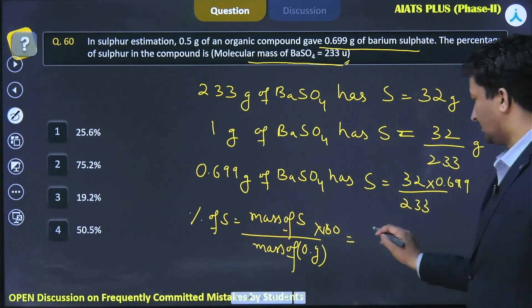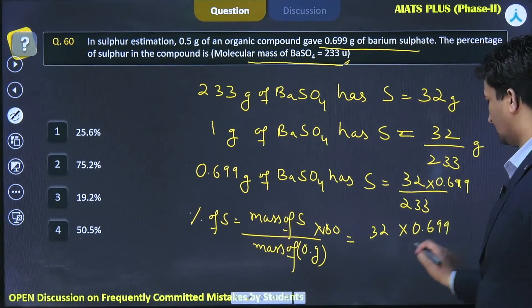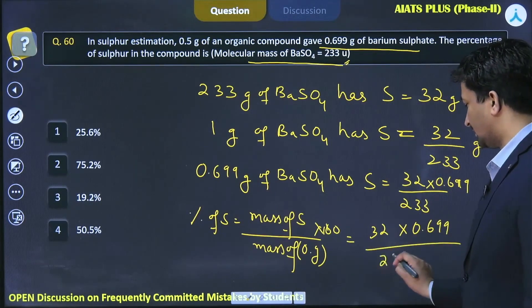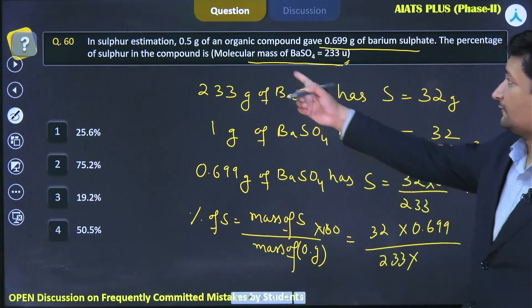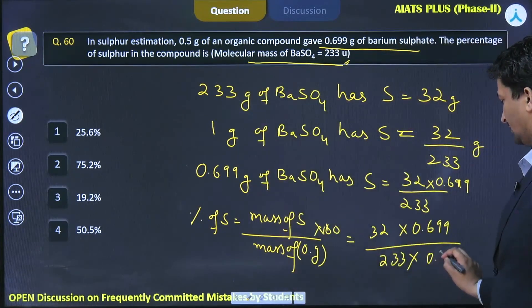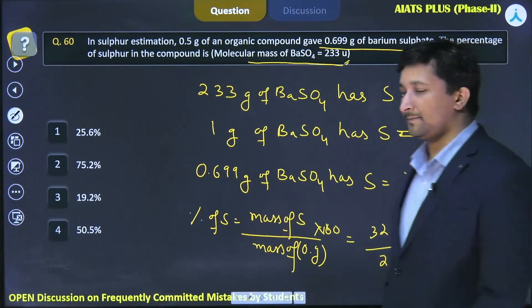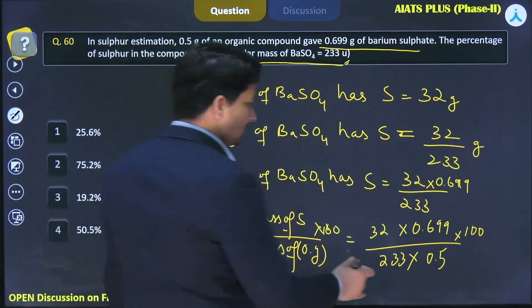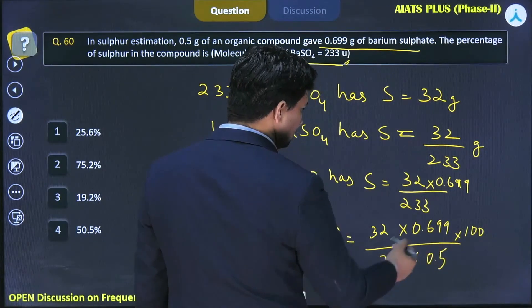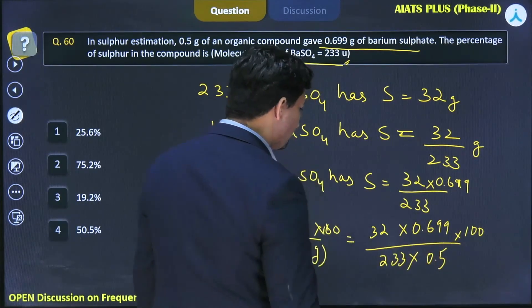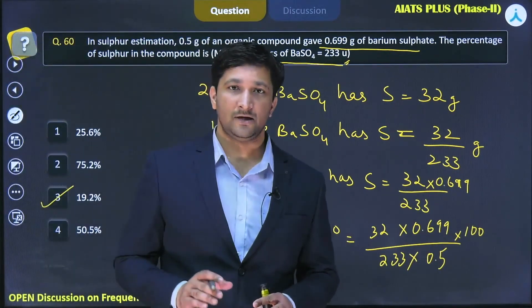This will be multiplied by 100 divided by 0.5. Upon solving this, you will obtain 19.2 percent. So this is how the unitary method helps you estimate problems related to the Carius tube method.